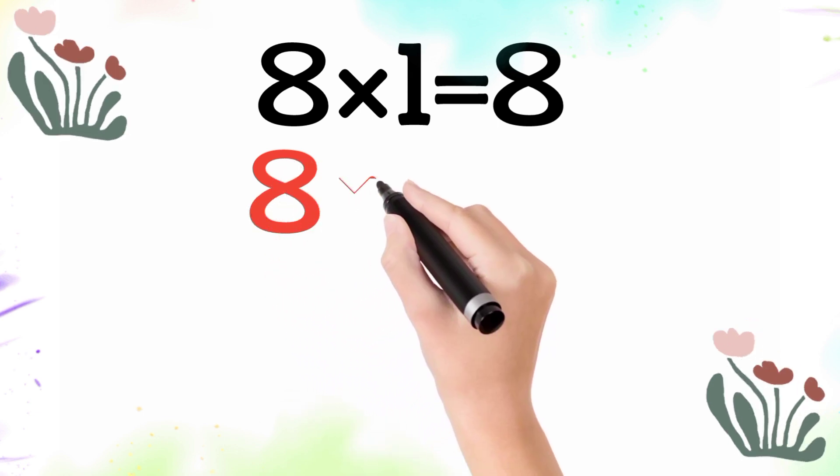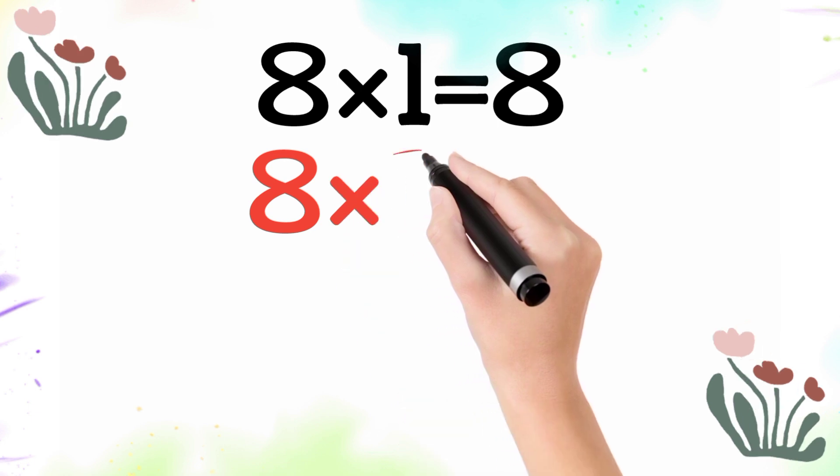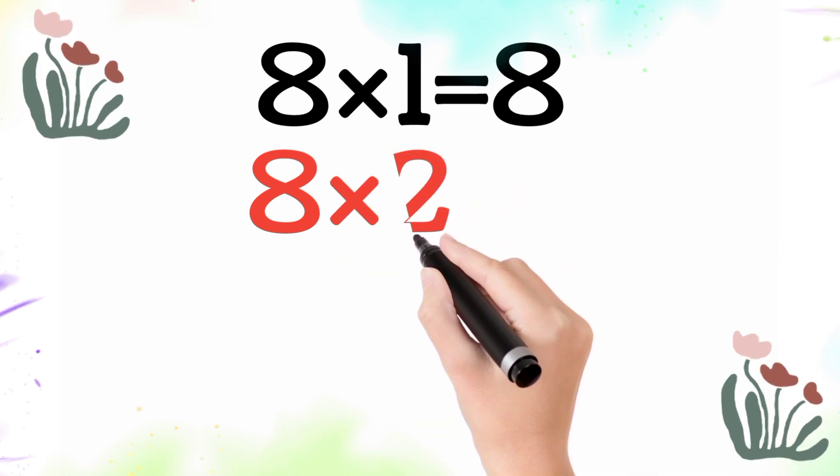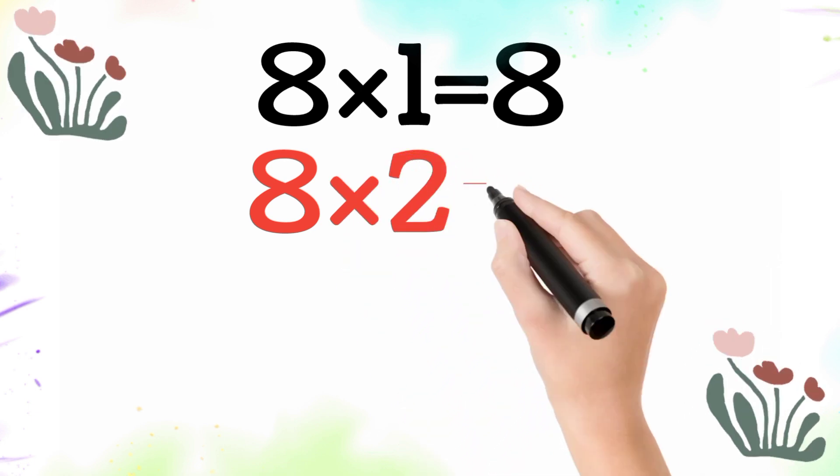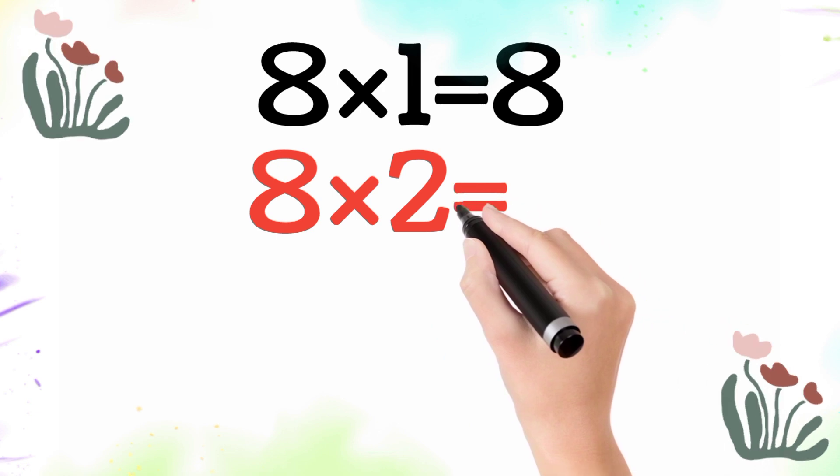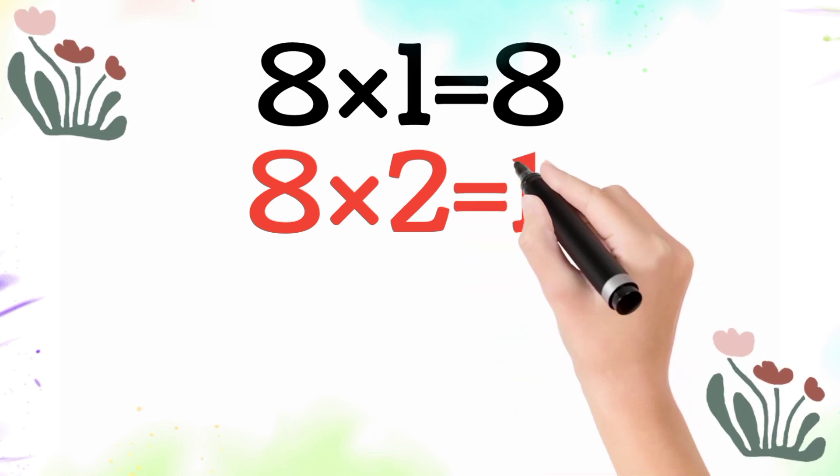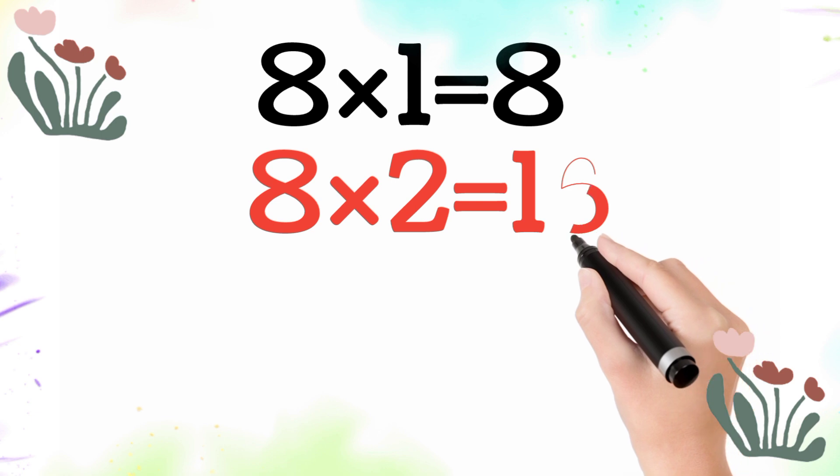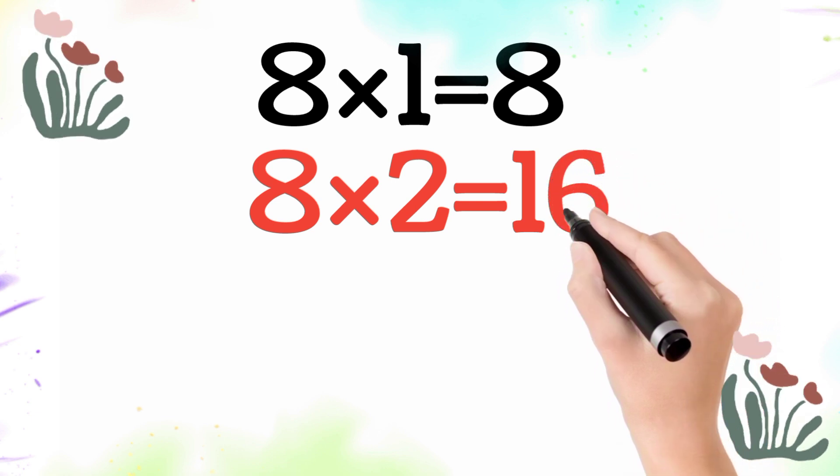8 multiplied by 2 is equal 16. So 8 times 2 is 16.